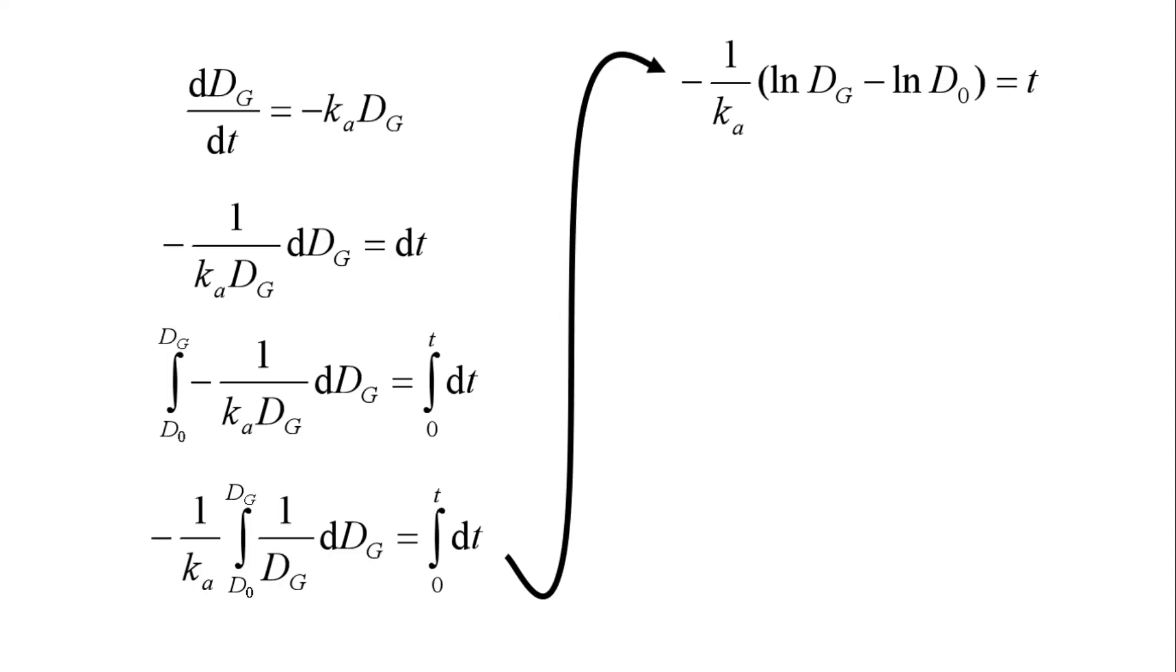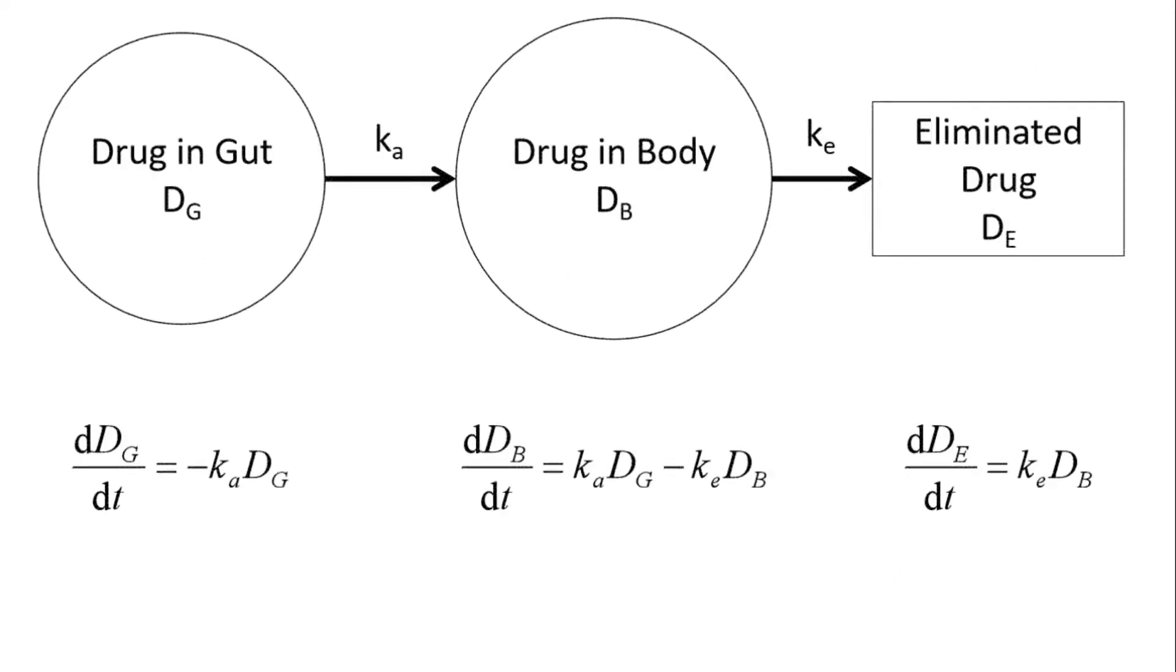We can multiply both sides by negative KA, and following our natural log rules, we can divide DG over D0. Lastly, we can raise both sides to an exponential and multiply both sides by D0 to finally get an expression to describe how the drug in the gut changes over time, given these two parameters D0 and KA.